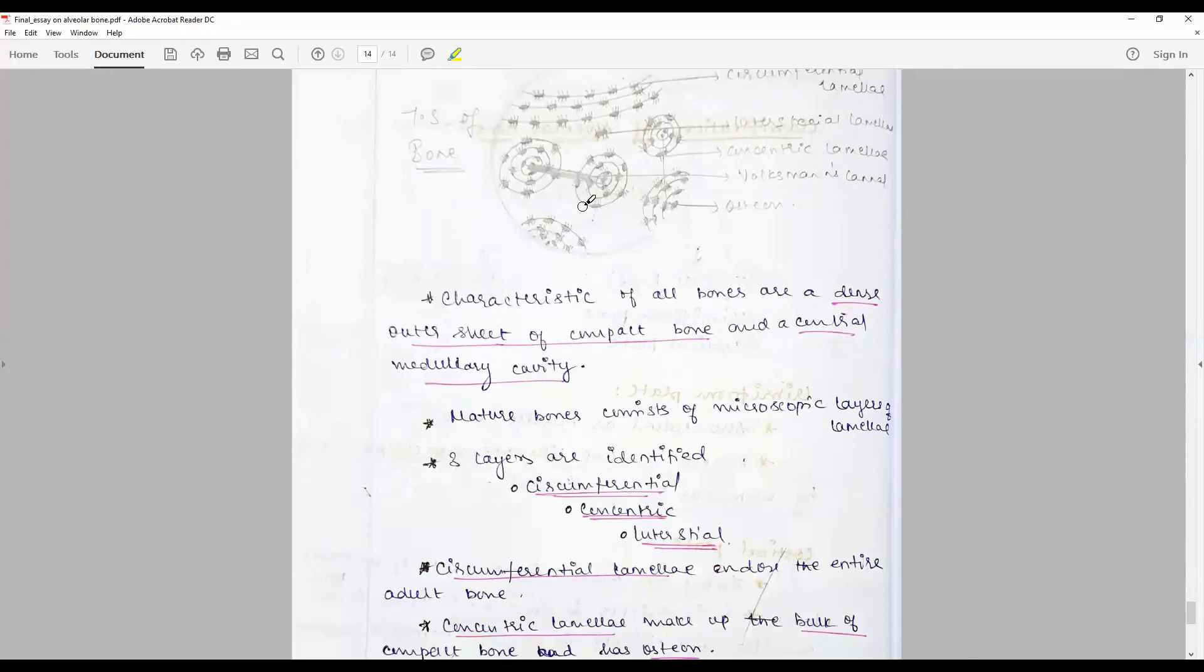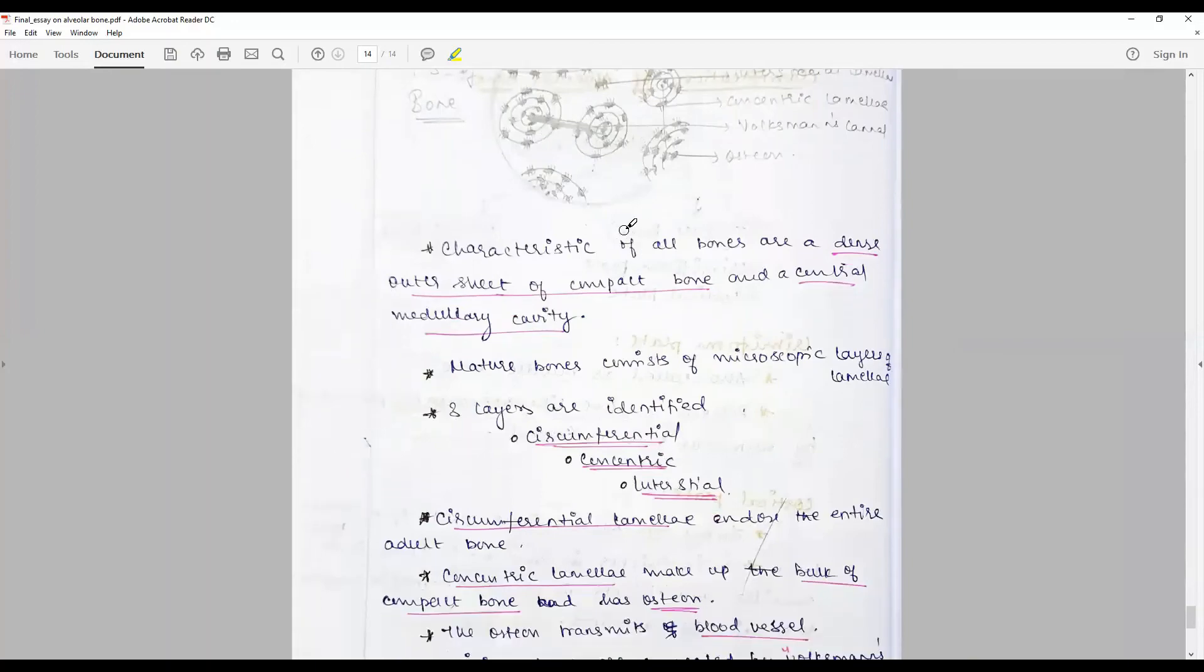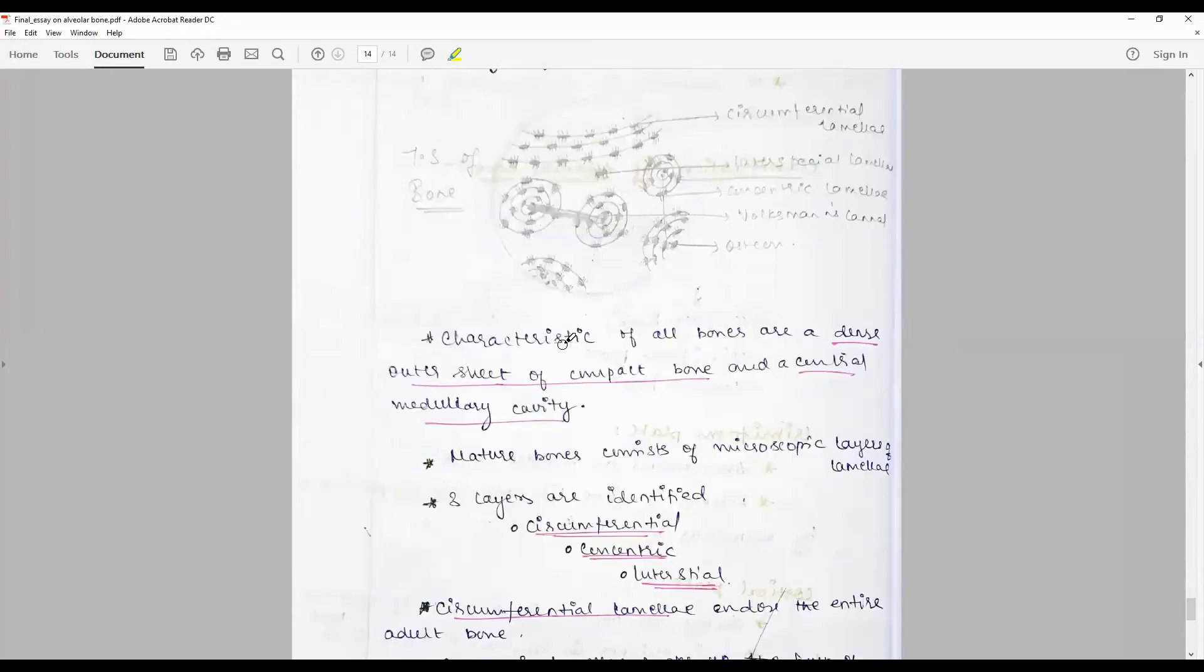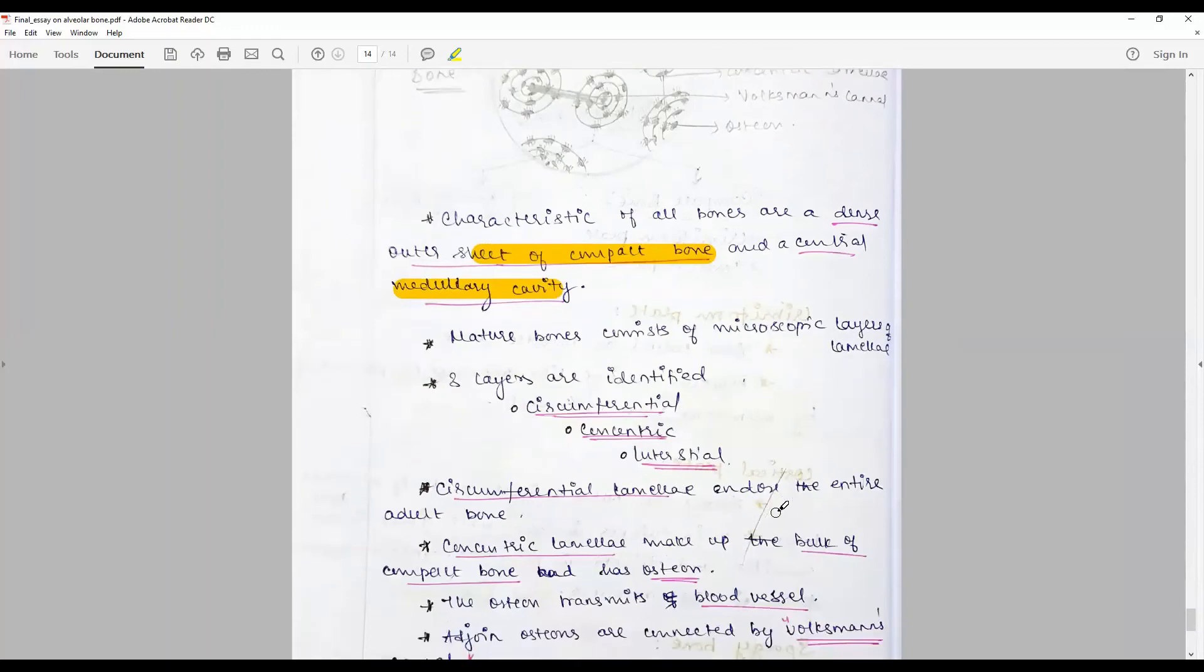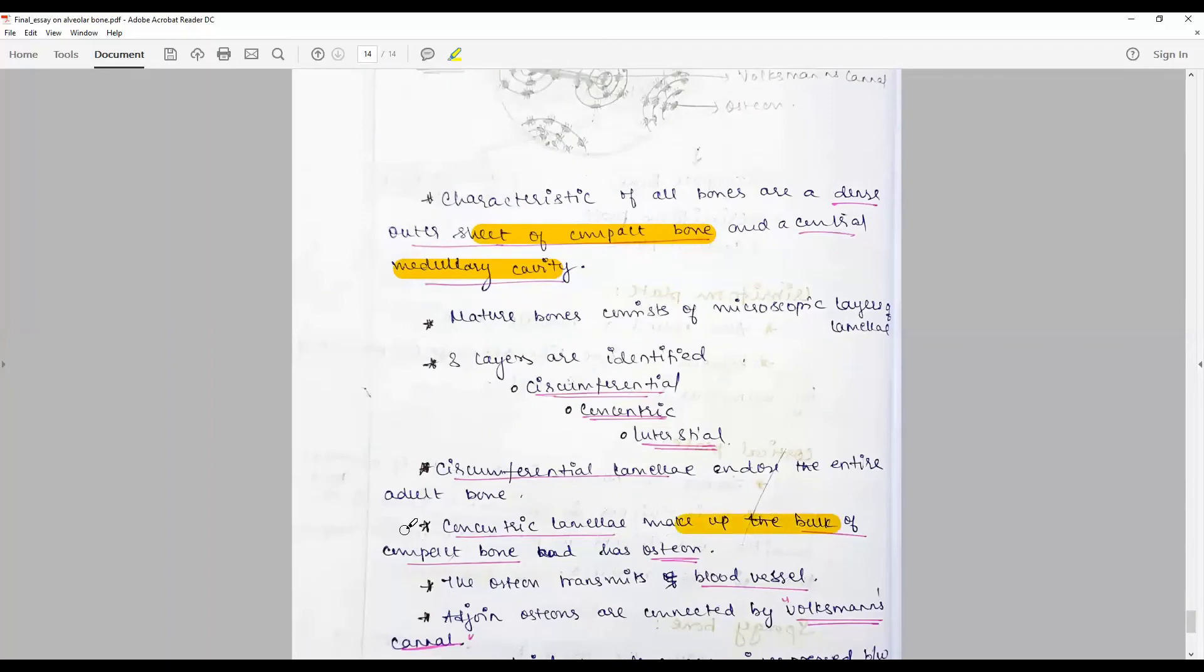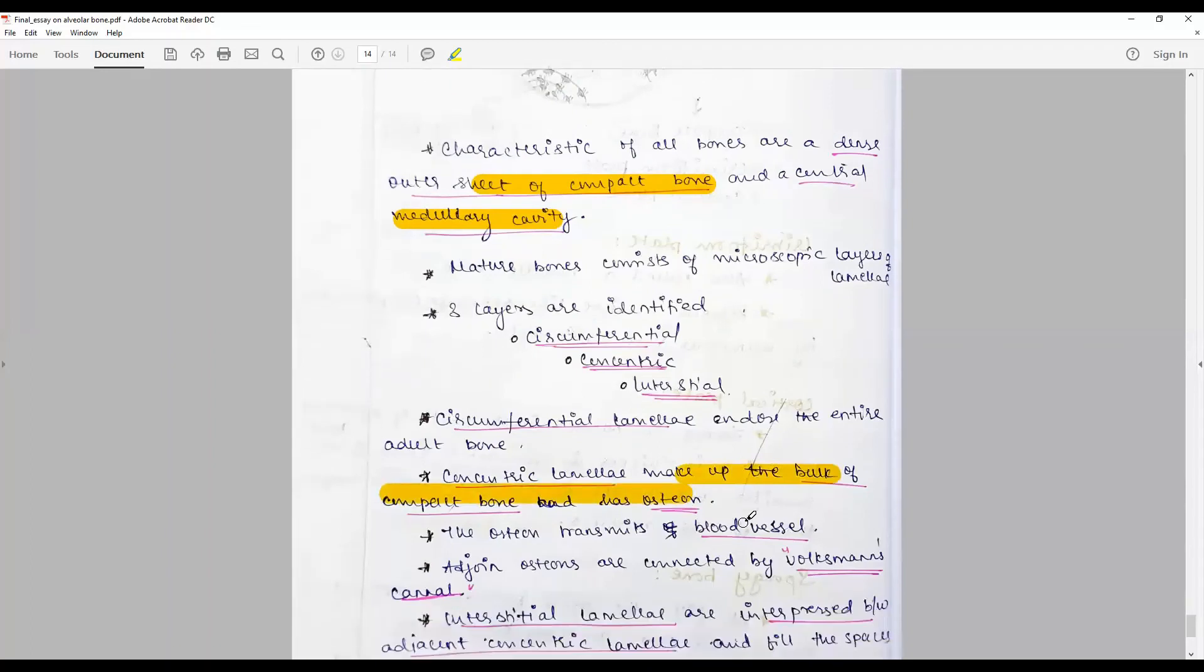Histology of bone: again, circumferential, concentric, interstitial, Haversian canals. The diagram needs a dense outer sheet of compact bone and central medullary cavity. Circumferential lamellae run around the entire adult bone. Concentric makes up the bulk of the compact bone and has osteons. Osteons have a central blood vessel, and adjoining osteons are connected by Volkmann canals.